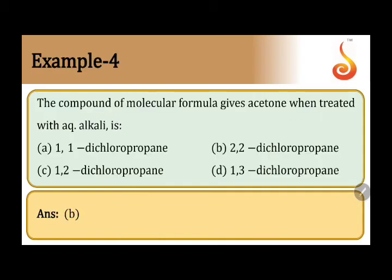Going back to our question: which compound gives acetone when treated with aqueous alkali? We want acetone—three carbons with double bond O on the second carbon. When will we get this structure?